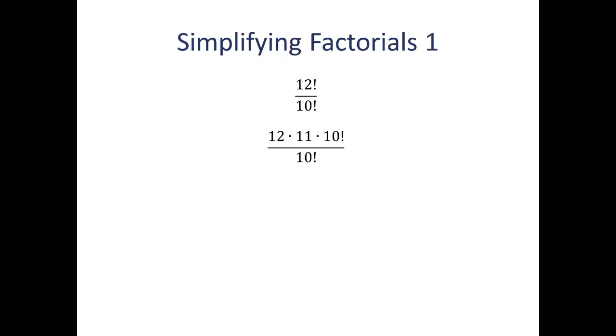Now that we've rewritten it that way, this becomes a lot simpler because we can cancel the 10 factorial in the numerator with the 10 factorial in the denominator, and that leaves us with just 12 times 11 or 132.